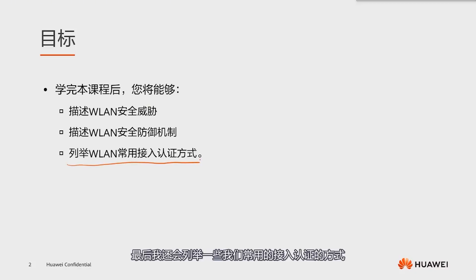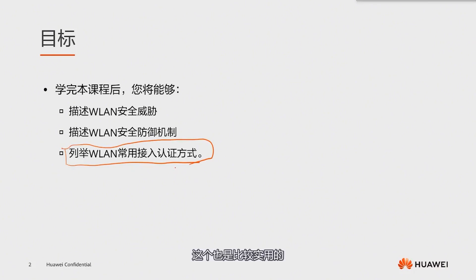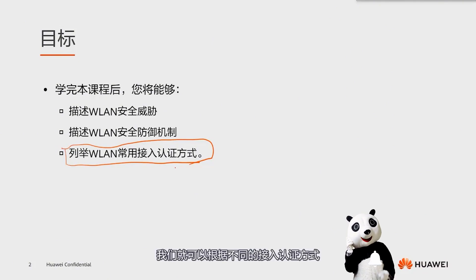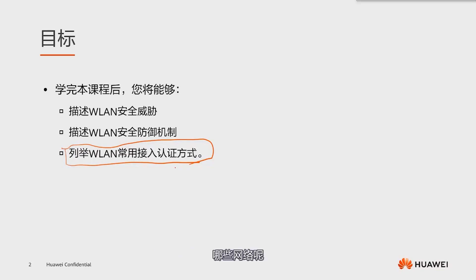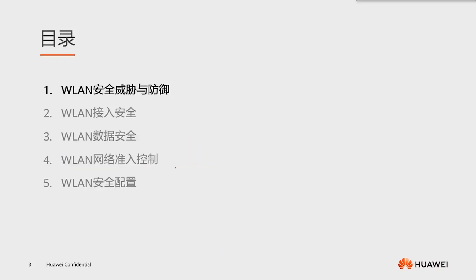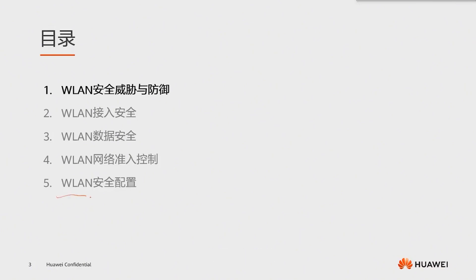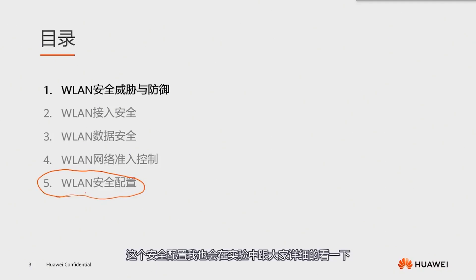After completing this class, you will know what security threats WLAN faces and what security defense mechanisms we have to address these threats. I will also list some commonly used access authentication methods, which are quite practical. In our daily work, we can use different authentication methods to distinguish between secure and insecure networks. This lesson is divided into five sections: security threats and defenses, access security, data security, WLAN network usage control, and security configuration. I will also show you in detail how to configure security in the experiment.